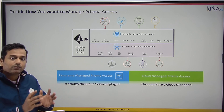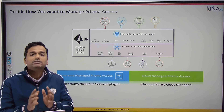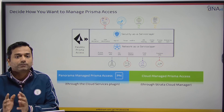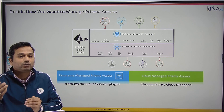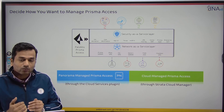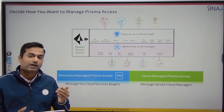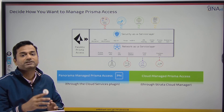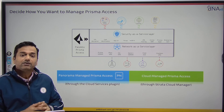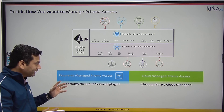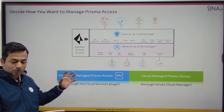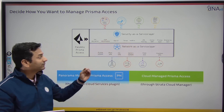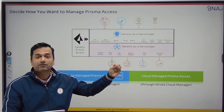However, you would require the cloud service plugin to be installed on your Panorama. You have to download the cloud service plugin, install it on Panorama, and then you can connect your Prisma Access. Once you have connected your Prisma Access through Panorama, you can manage the security-as-a-service layer as well as the network-as-a-service layer.